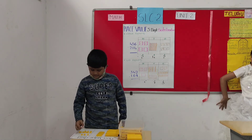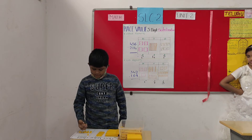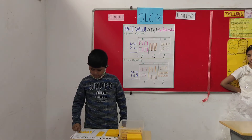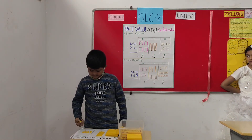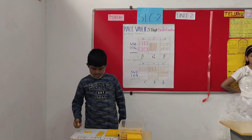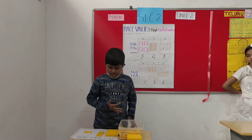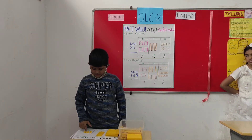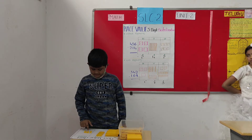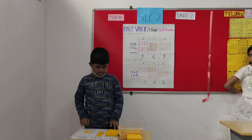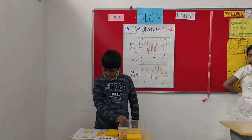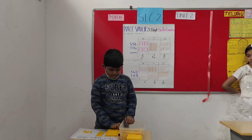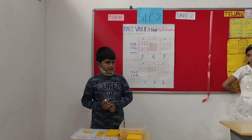We subtract 7 from 14, counting out 7. The remaining answer is 7. So, in the tens place we now have 4 tens, and we have to subtract 8.